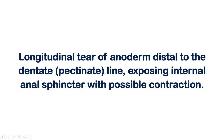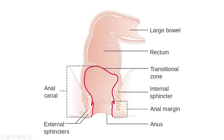That's a complex definition, but I'll simplify it with a diagram. The pectinate or dentate line is an imaginary line — not a real line — that splits the upper two-thirds from the lower one-third of the anal canal. The upper two-thirds is supplied by a different set of nerves and blood vessels than the lower one-third. That's all that's saying.